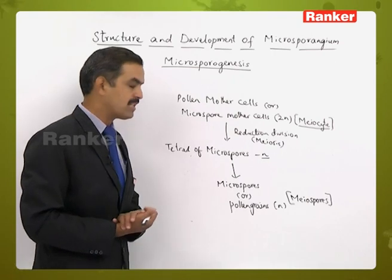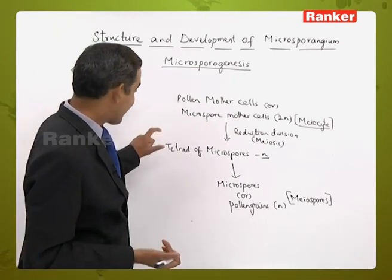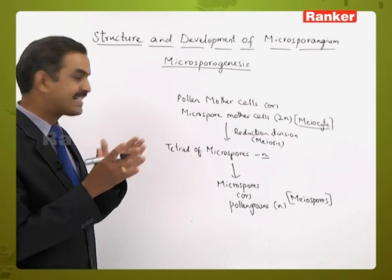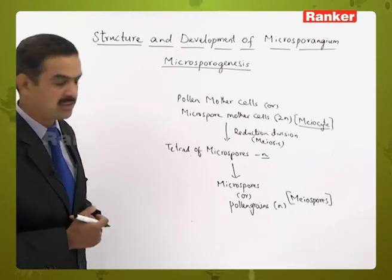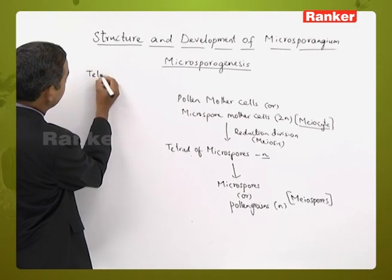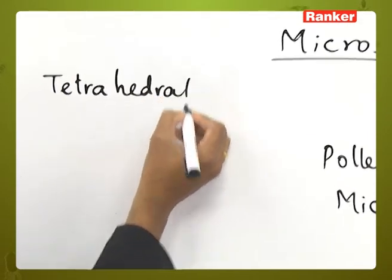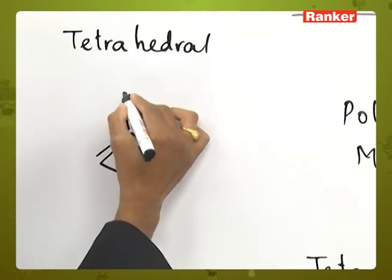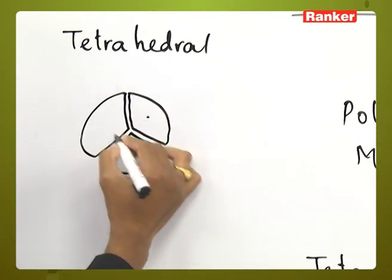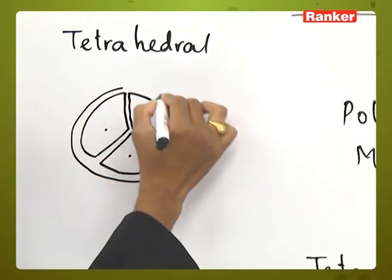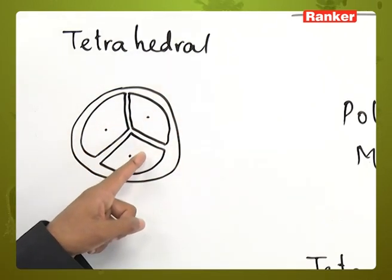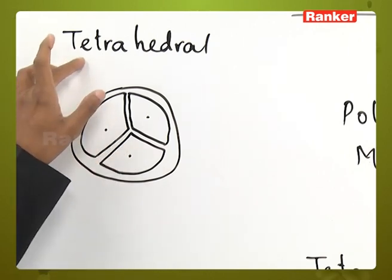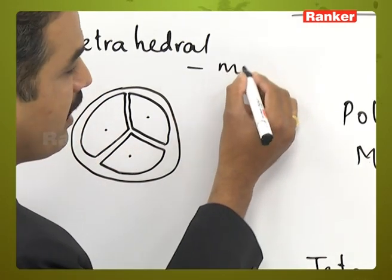The microspores can be arranged inside the tetrad in different ways. The most common arrangement is the tetrahedral form, where the four divided cells are arranged in a three-dimensional tetrahedral pattern. We can see three microspores visibly, with the fourth on the other side. This tetrahedral arrangement is the most common type.